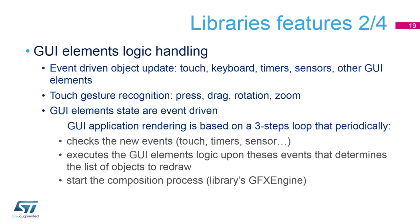Besides graphical user interface element rendering, the Graphic Library must also handle their internal logic through event-driven object updates. Events can be touch events, keyboard events, timers, sensors, and other GUI elements. The Graphic Library also supports touch gesture recognition such as press, drag, rotation, and zoom. The GUI application rendering is based on a three-step loop that periodically checks for new events — touch, timers, etc. — executes the GUI elements logic upon these events to determine the list of objects to be redrawn, and then starts the composition process through the library's graphics engine.